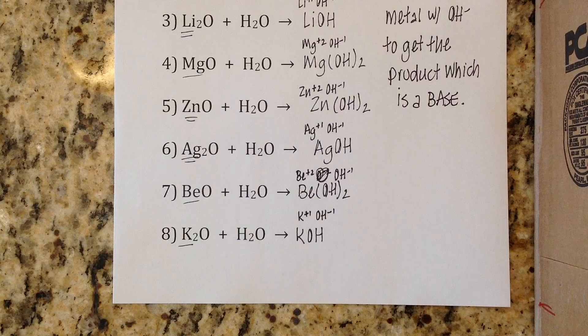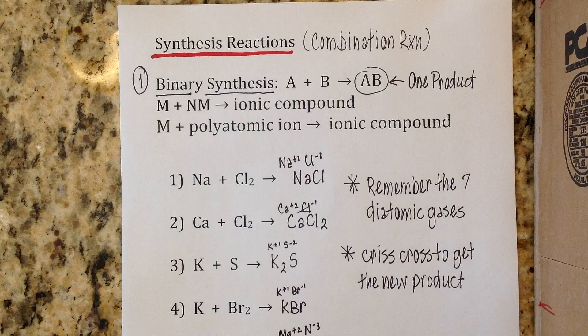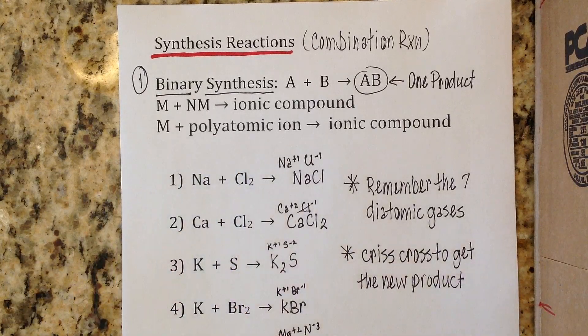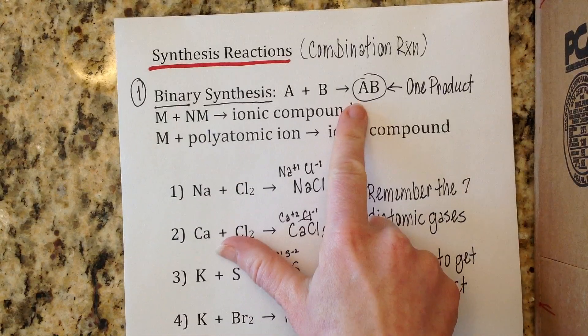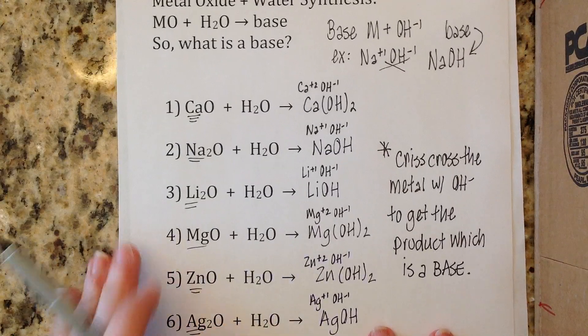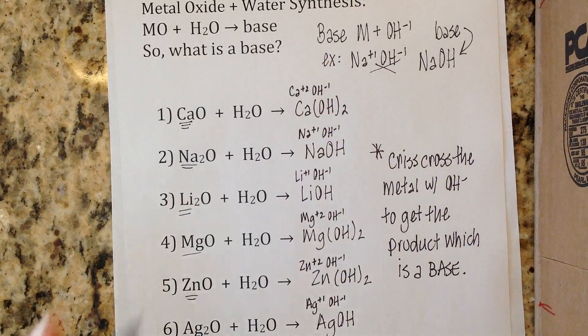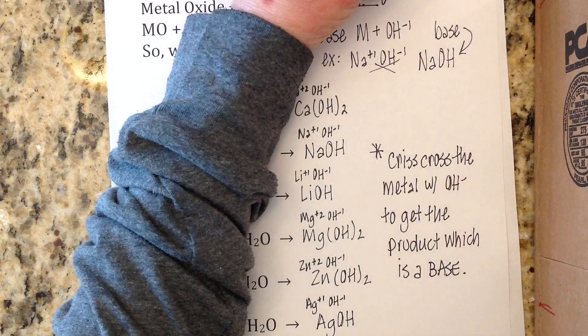Today you've seen two types of synthesis reactions. Binary synthesis: a metal plus a non-metal gives you an ionic compound — you could also have a metal with a polyatomic ion. You know you have a synthesis reaction when there is one product; that was true for both types today. For metal oxide-water reactions, take the metal, crisscross it with hydroxide to get the product — again, one product, making it a synthesis reaction.